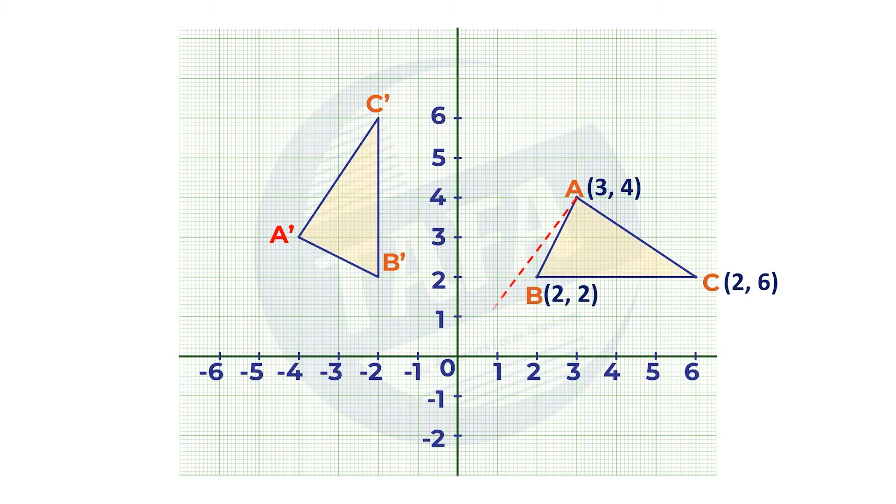rotating O to A. If you join O to A, then you measure 90 degrees in anti-clockwise direction, then measuring the distance from O to A, which should be the same distance from O to A prime, you locate A prime which is on the coordinate negative two two.